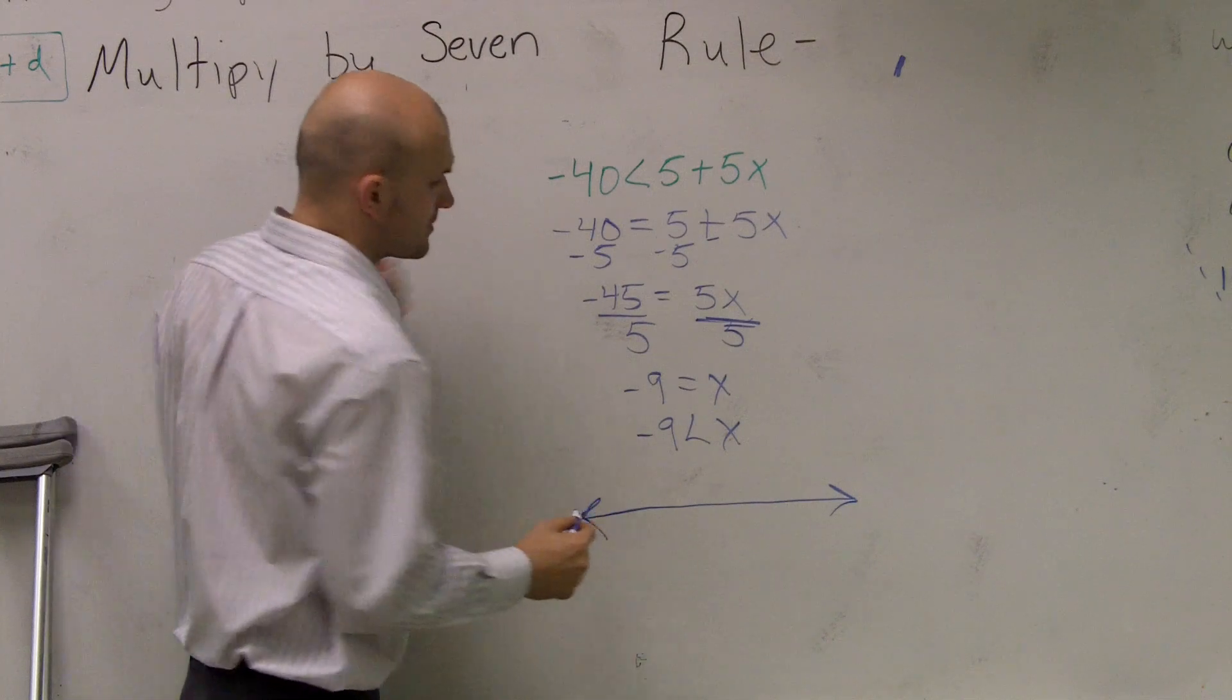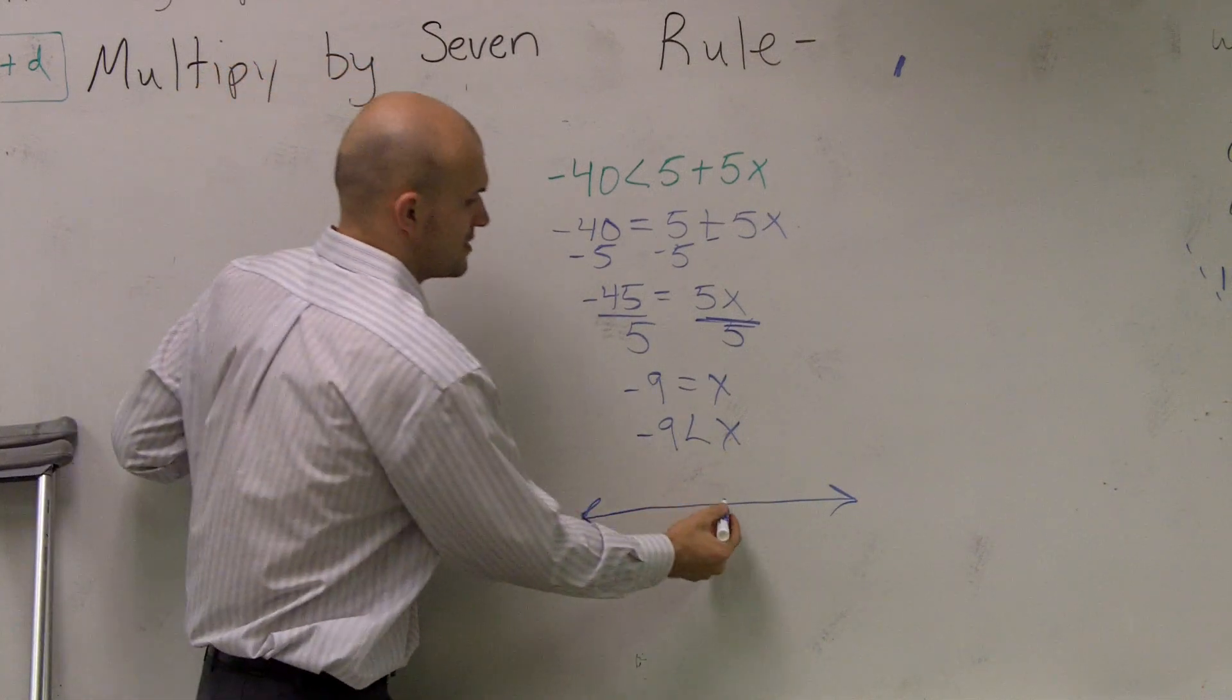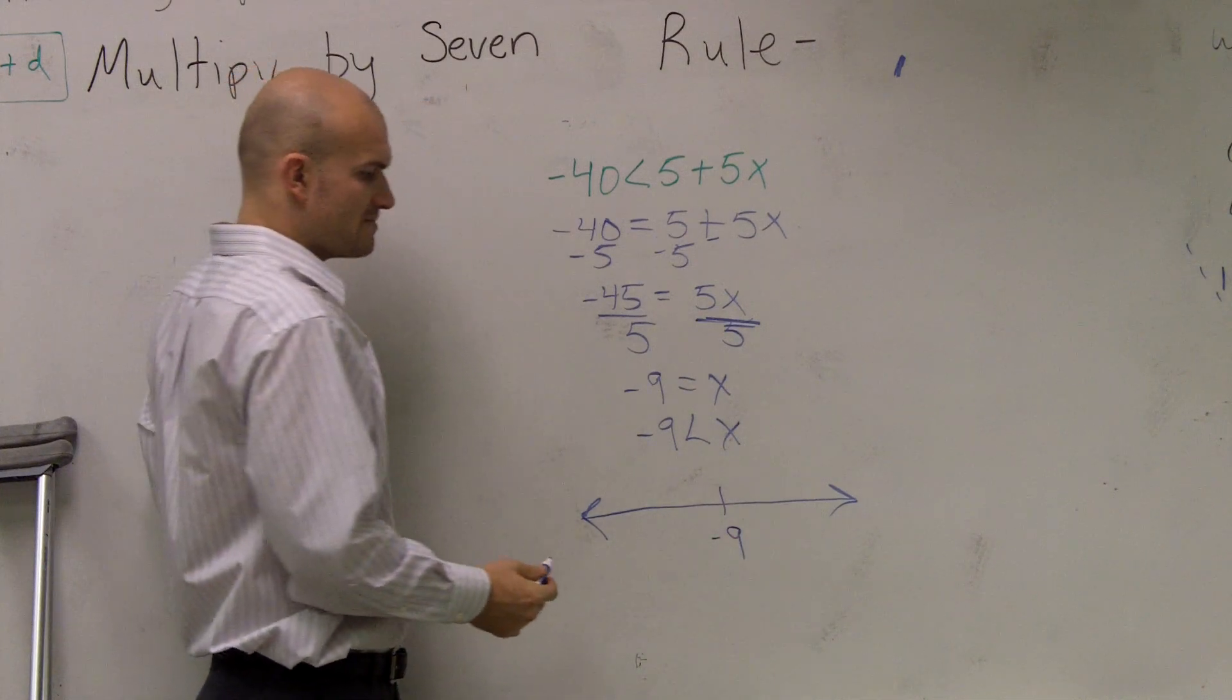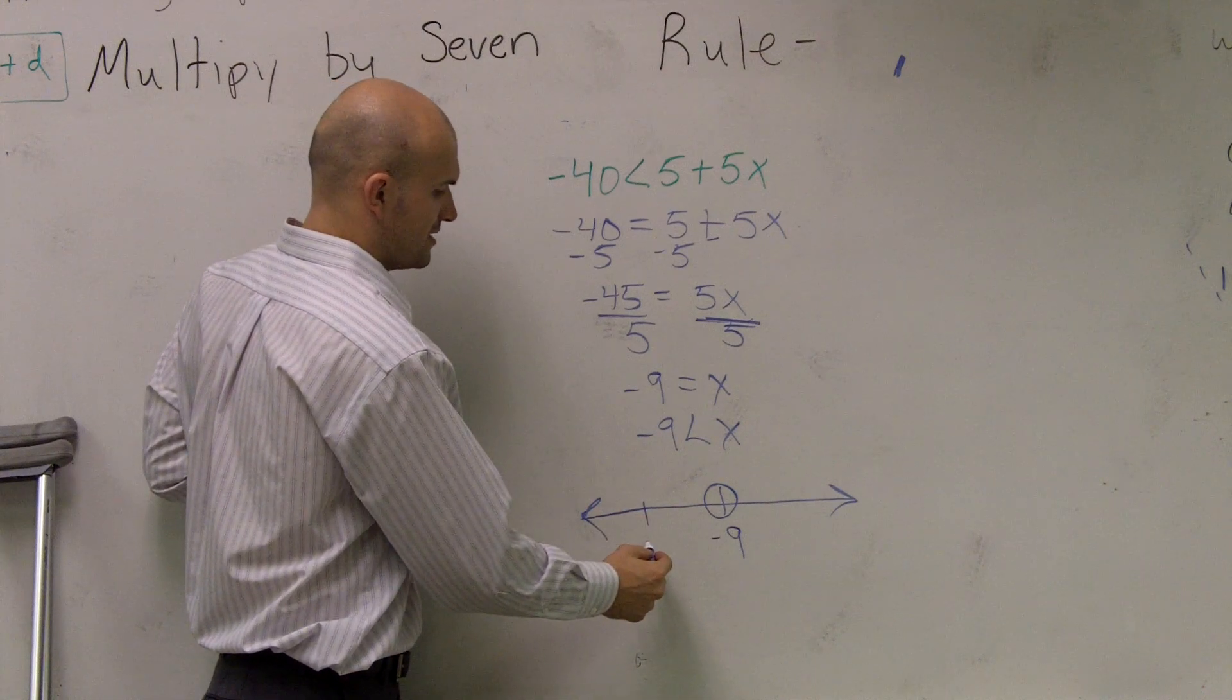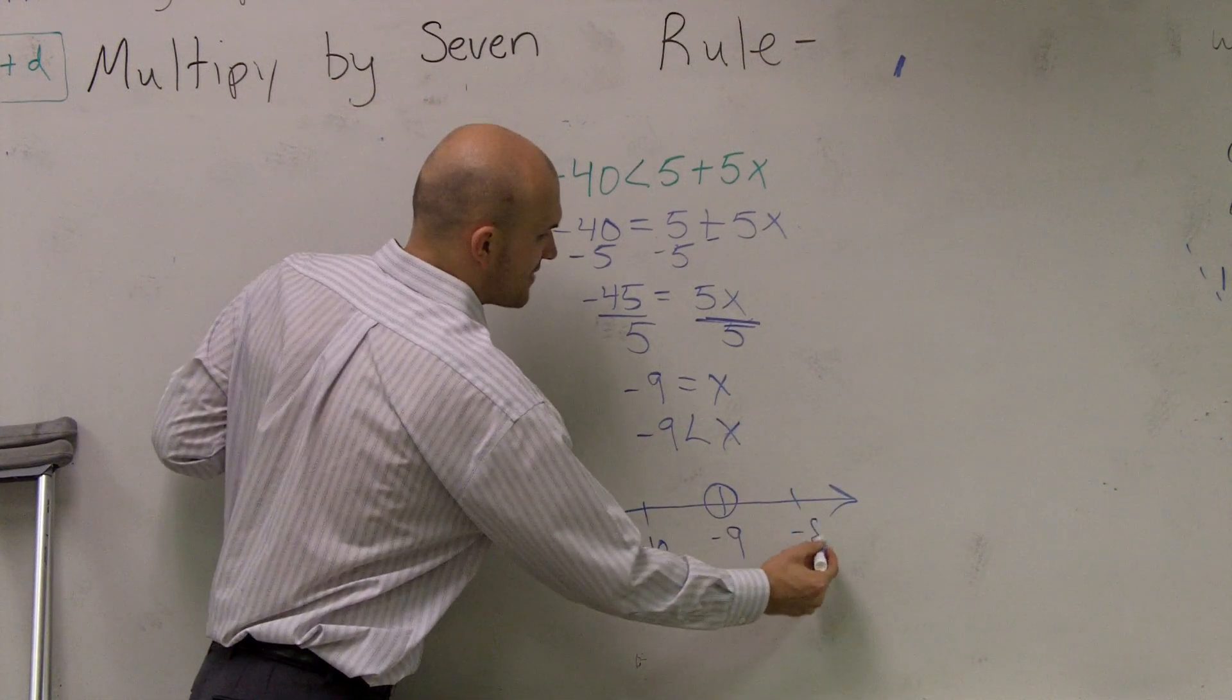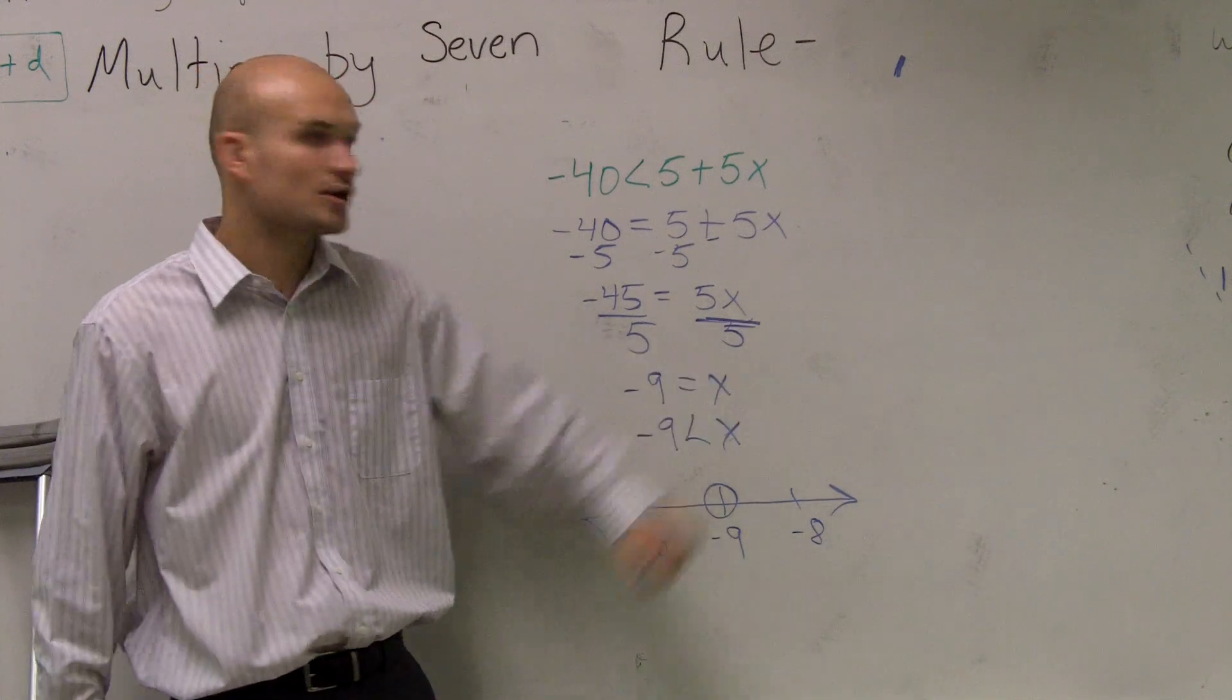Then, to graph it, I'm going to kind of go through the quicker method now. Because we've already done enough times working with this. So, I'm going to say -9 is my main point. I'll make a nice big dot. I'll say, this would be like -10, and this would be -8. Okay? And, you know, obviously they go left and right.